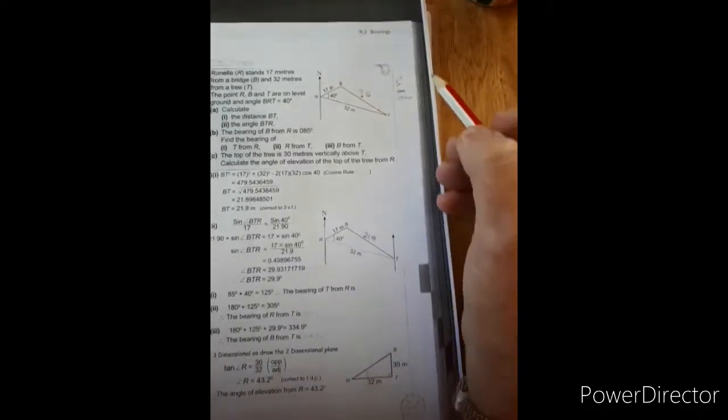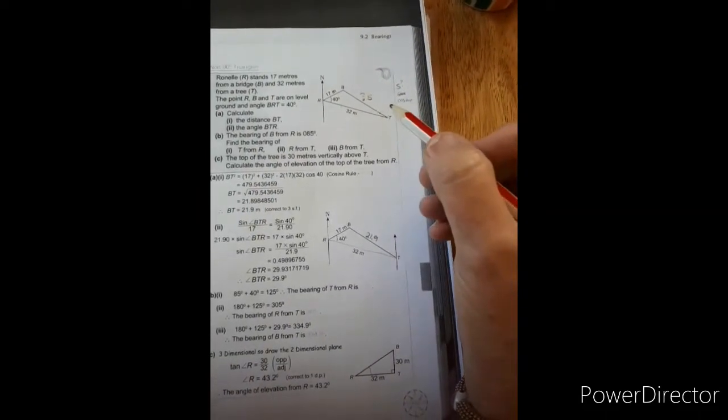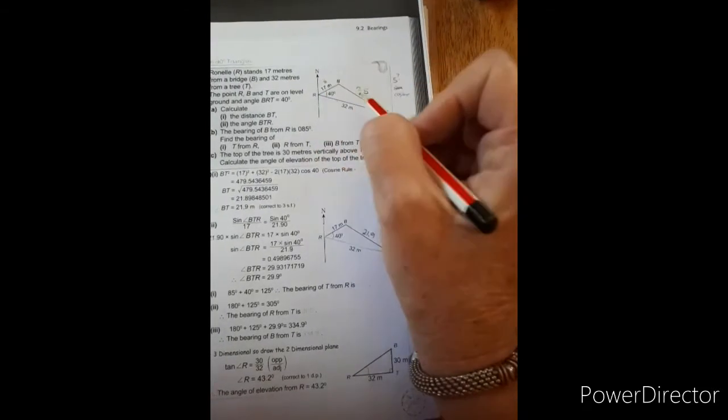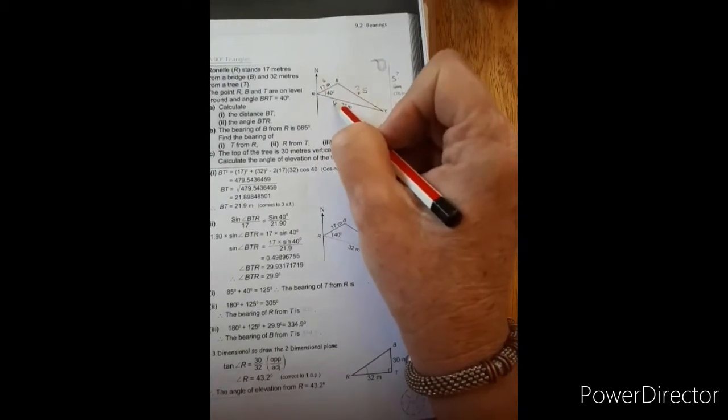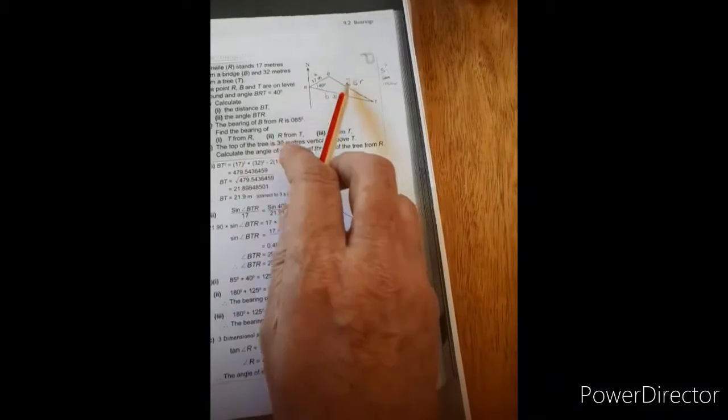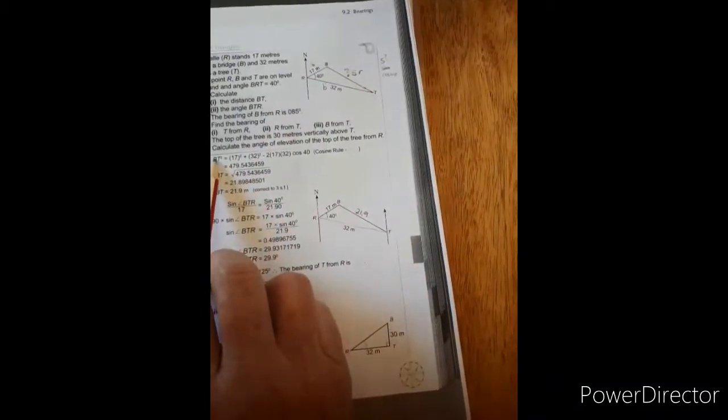And remember, with the cosine rule, we are just simply going to label our sides. This is T, this one is B, this side is R. And our cosine rule is BT squared.